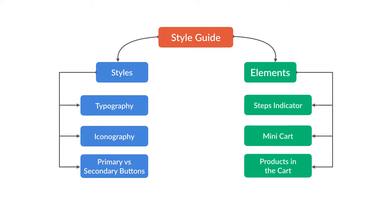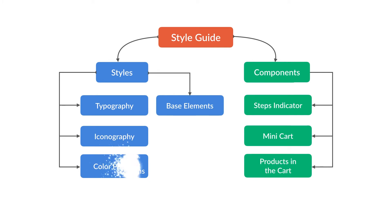Taking a deeper look into these groups, you can fine-tune them and turn them into categories that you can use in your style guide as it grows. For example, "elements" is a very vague term that could refer to any HTML element, so a better name for this group could be "components" or "modules." Primary versus secondary buttons could be part of base elements, and the color aspect could go inside of a color palette category.